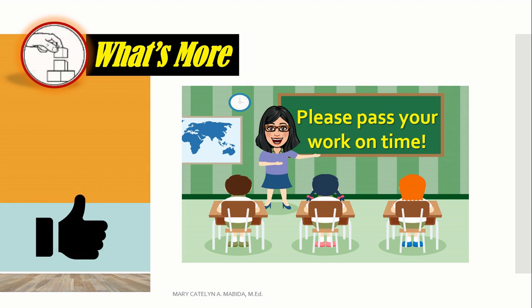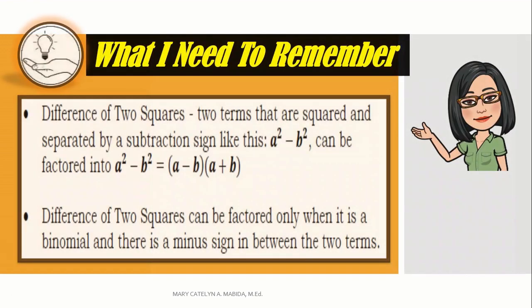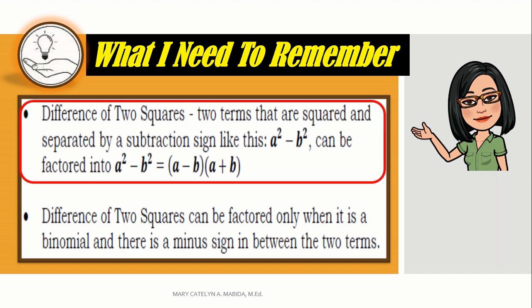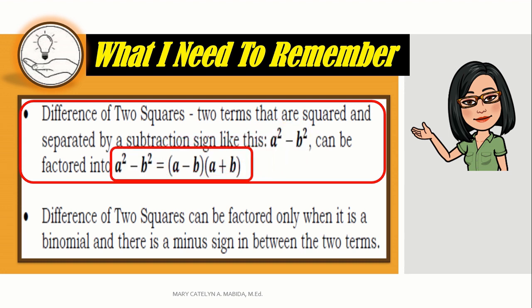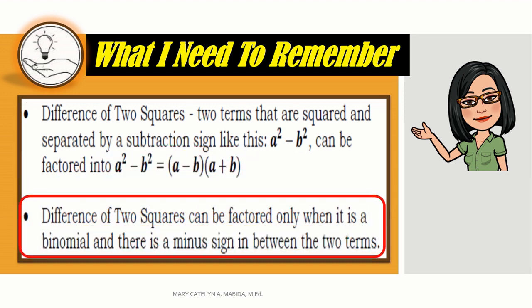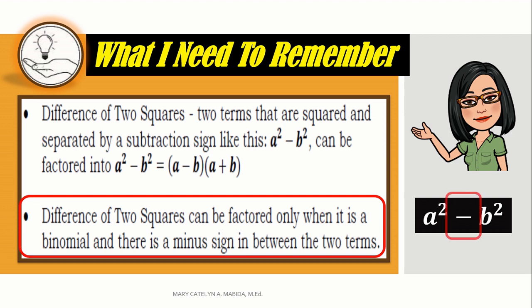Give me a thumbs up. That's it. Good job. What you need to remember: the difference of two squares are two terms that are squared and separated by a subtraction sign — a squared minus b squared — and can be factored into the quantity of a minus b times the quantity of a plus b. The difference of two squares can be factored only when it is a binomial and there is a minus sign in between the terms.